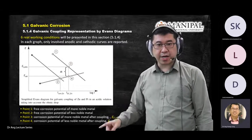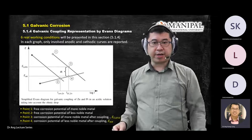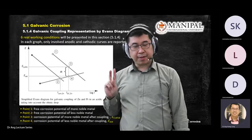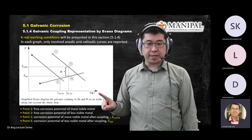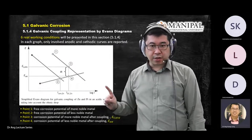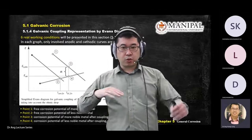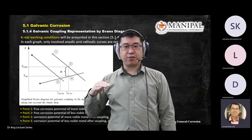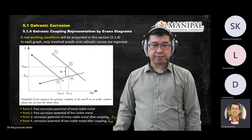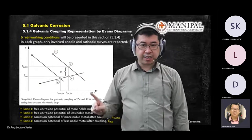On the Evans diagram, draw the two axes: E versus log I. For the lower nobility metal, draw a positive gradient line. For the higher nobility metal, draw a negative gradient line. They will intersect at one point. For the lower nobility metal, you assume two processes happen — it both contributes electrons and receives electrons — so you need to draw two lines for it.